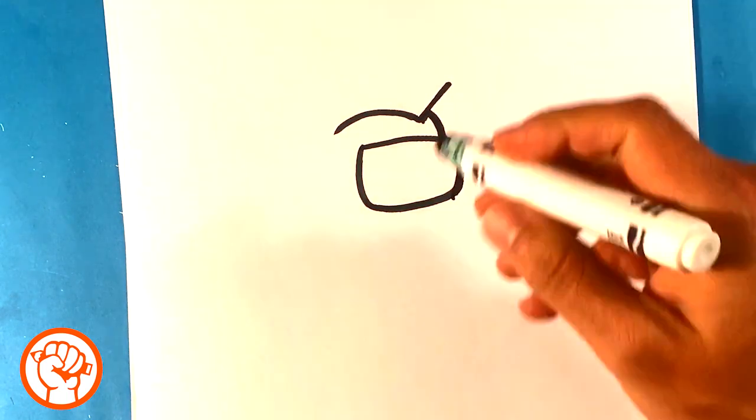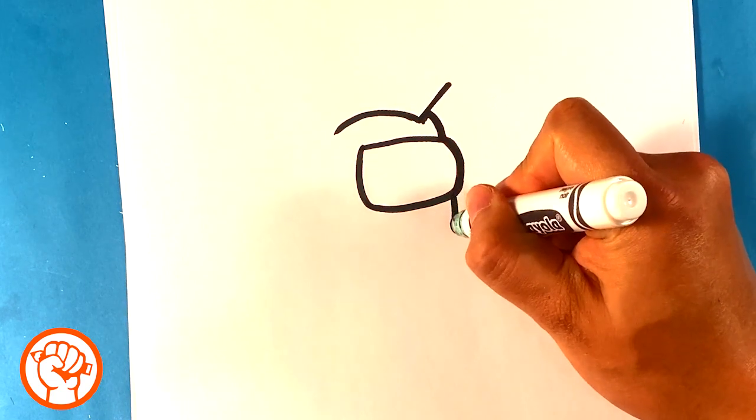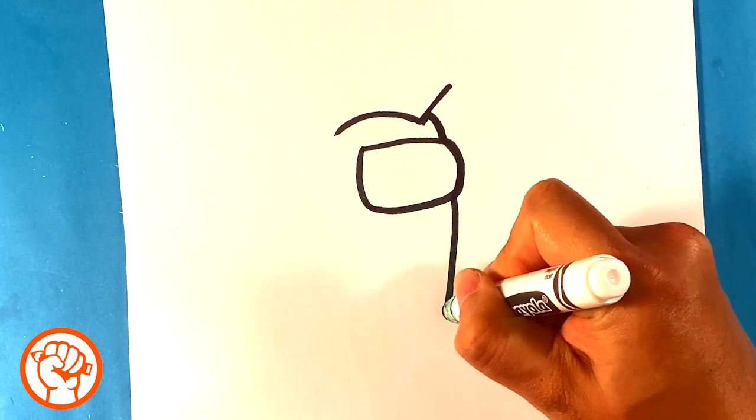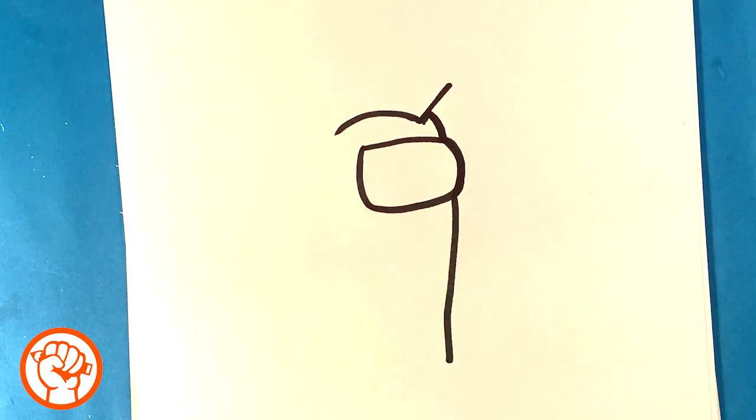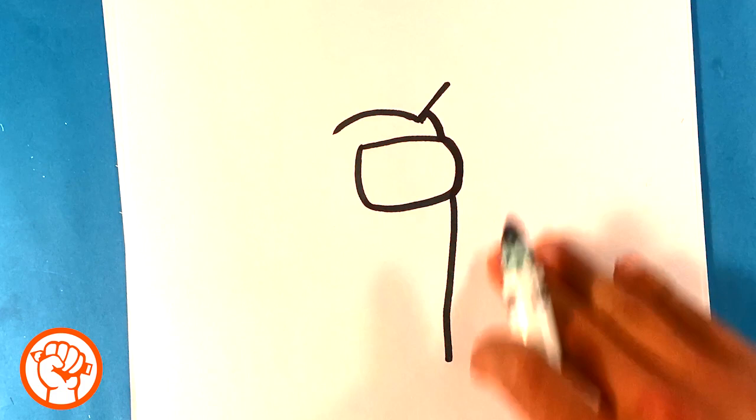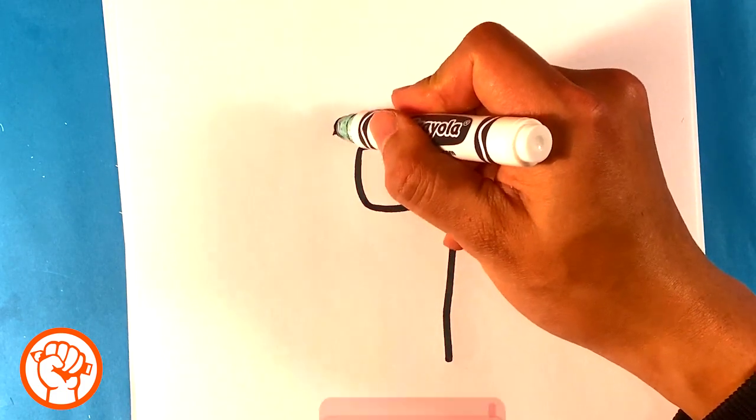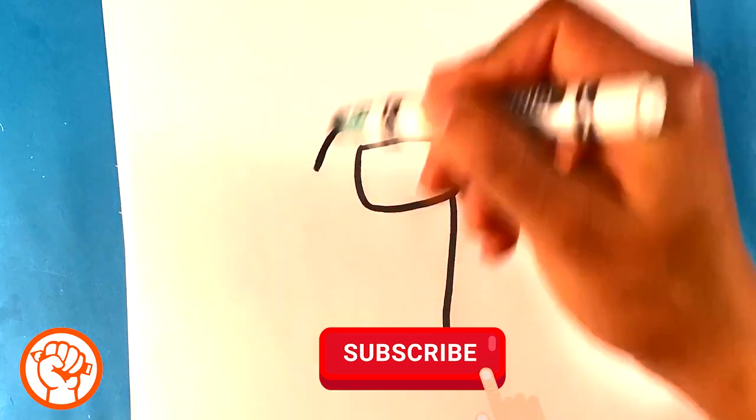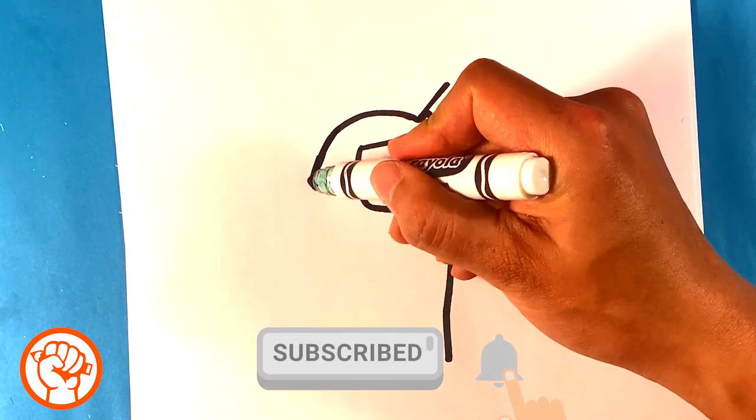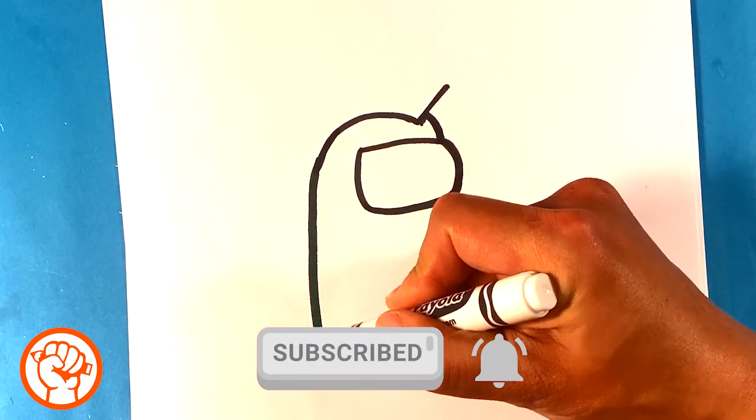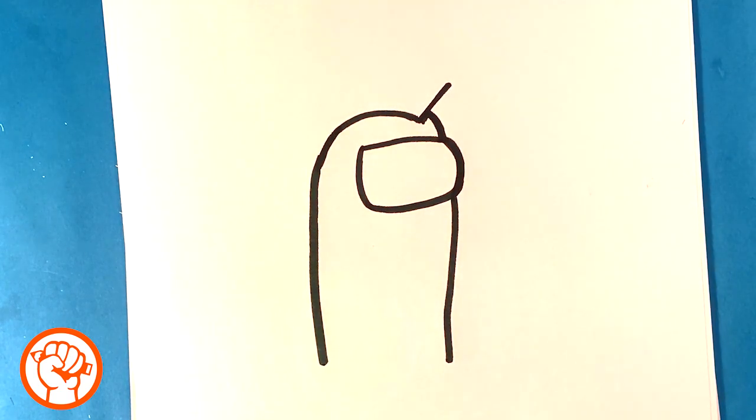I'm going to start in the front and pull a line all the way down for the stomach and leg, essentially in that same area. Going down the back.